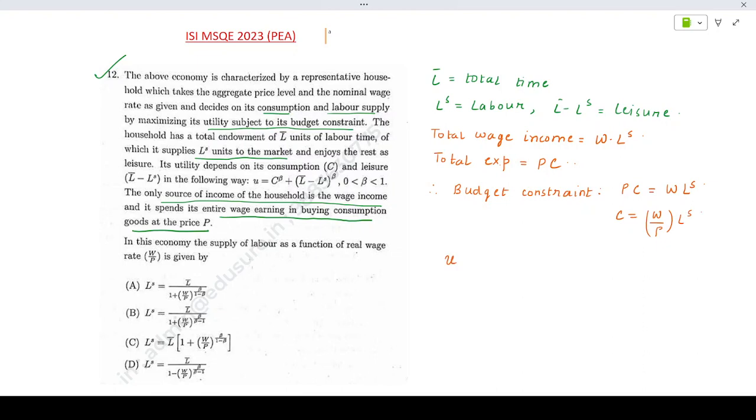The utility function as you can see is given by C to the power beta plus L bar minus LS to the power beta. In the place of C I can replace it as W by P times LS to the power beta.